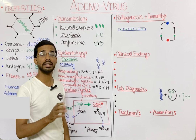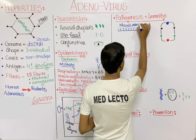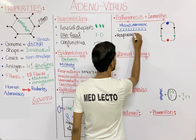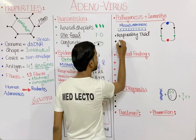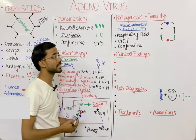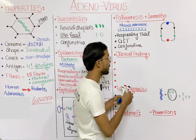Regarding pathogenesis, adenovirus affects mucous membranes or mucous epithelium. In our body, mucous membranes are found in the respiratory tract, the gastrointestinal tract (GIT), and the conjunctiva. These are the main target sites of adenovirus.